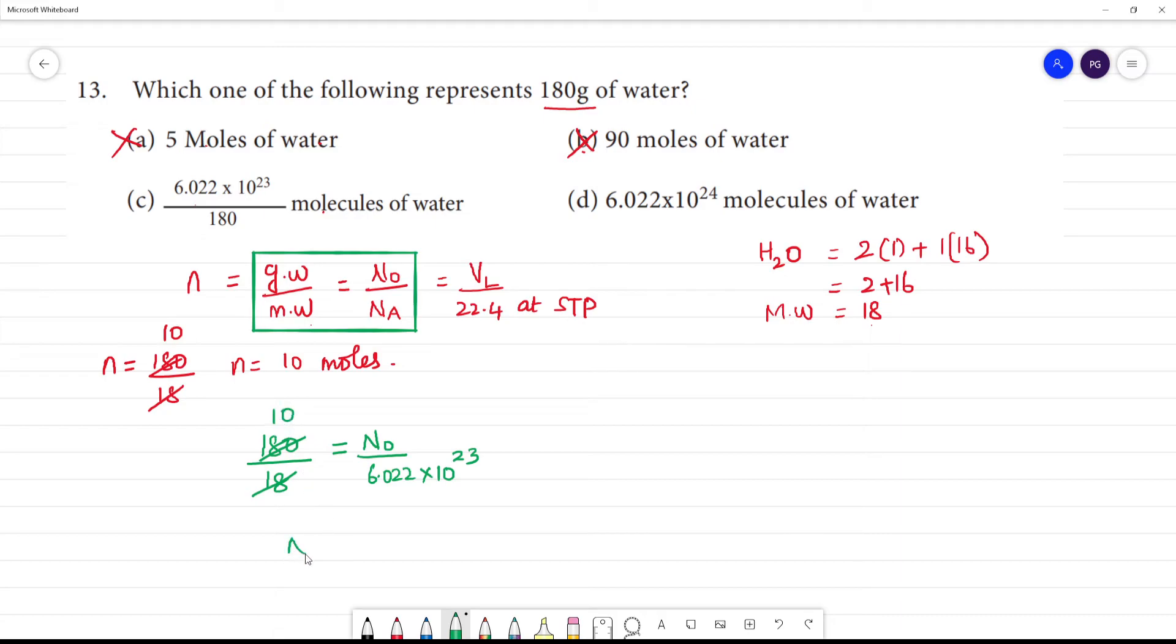If you cancel 10, then n0 equals 6.022 into 10 to the power 23 into 10. So n0 equals 6.022 into 10 to the power 24.